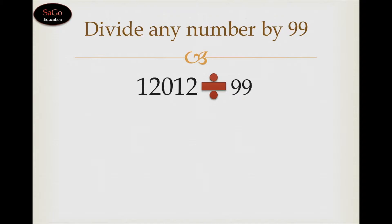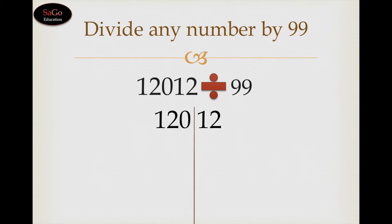In this video we learn how to divide any number by 99. Let's take a sum: 12012 divided by 99. Write down the dividend as it is, which is 12012. Put a slash before the last two digits because the nearest base of 99 is 100, and there are two zeros in the base 100. That is why we put a slash before the last two digits, which is 12.